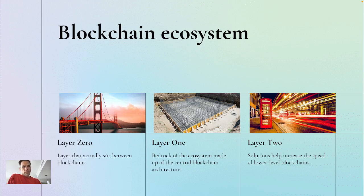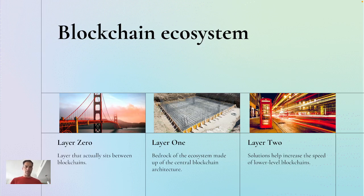Layer one is the core, the foundation — it's the main networks. It's blockchain, it's Ethereum, things like that. They are built a certain way and will always be built that way, which is why you have blockchain, Bitcoin Cash, Ethereum, things like Ethereum 2.0. The whole makeup and design was that they would do a certain thing, and that's all they would ever do.